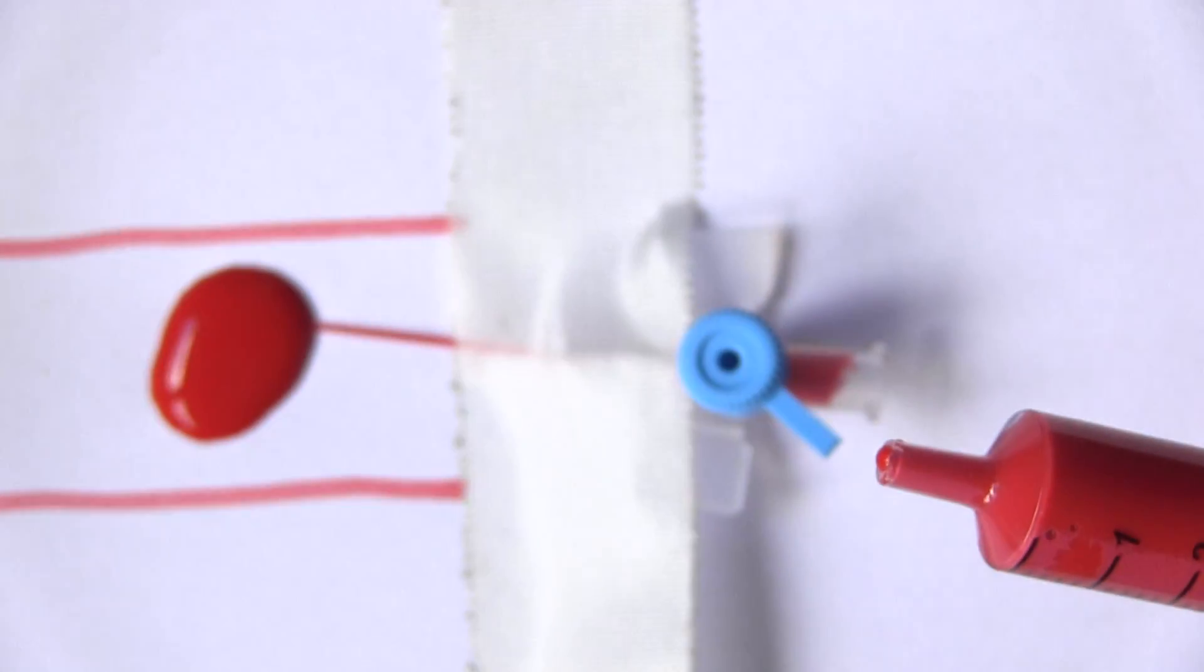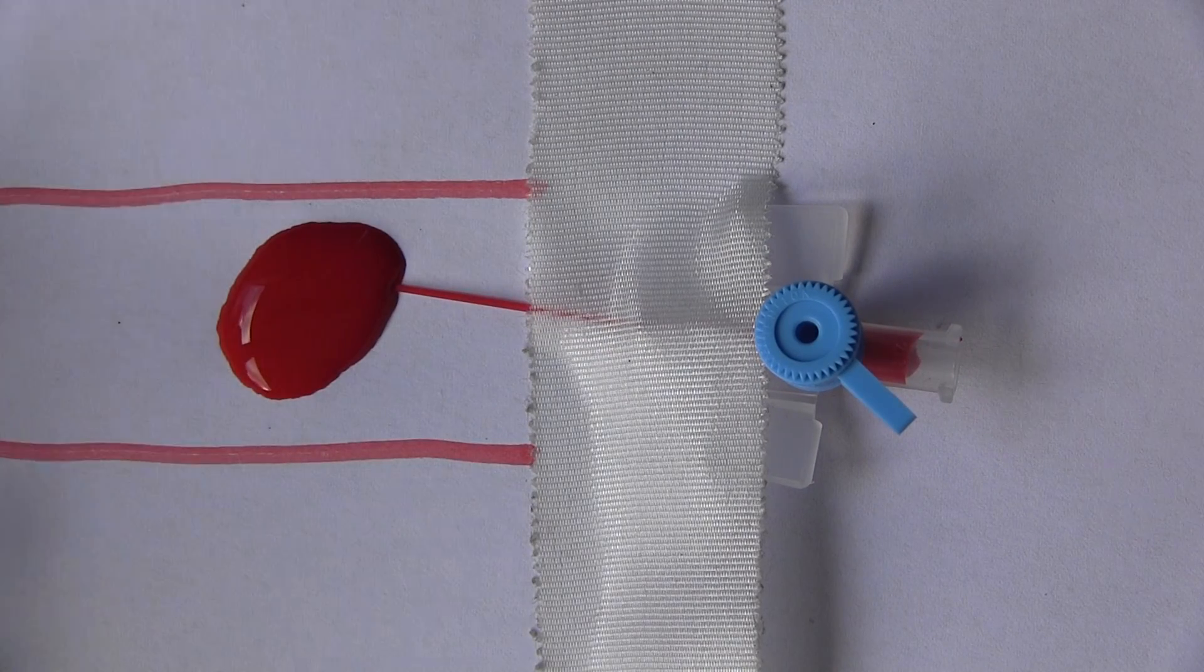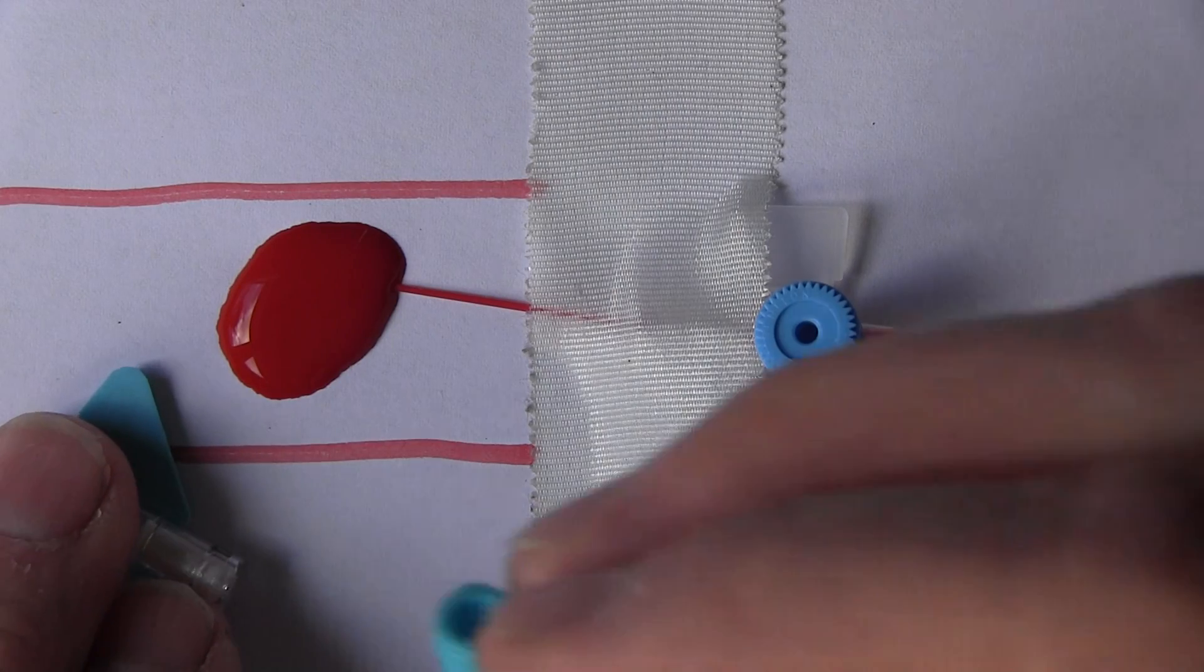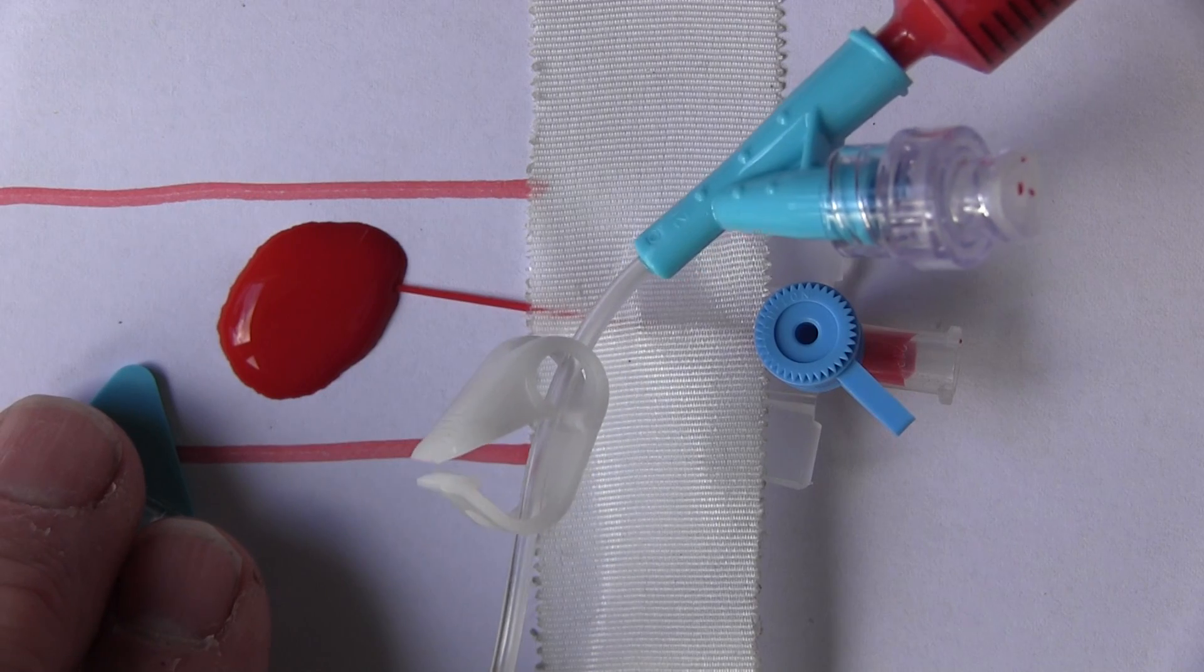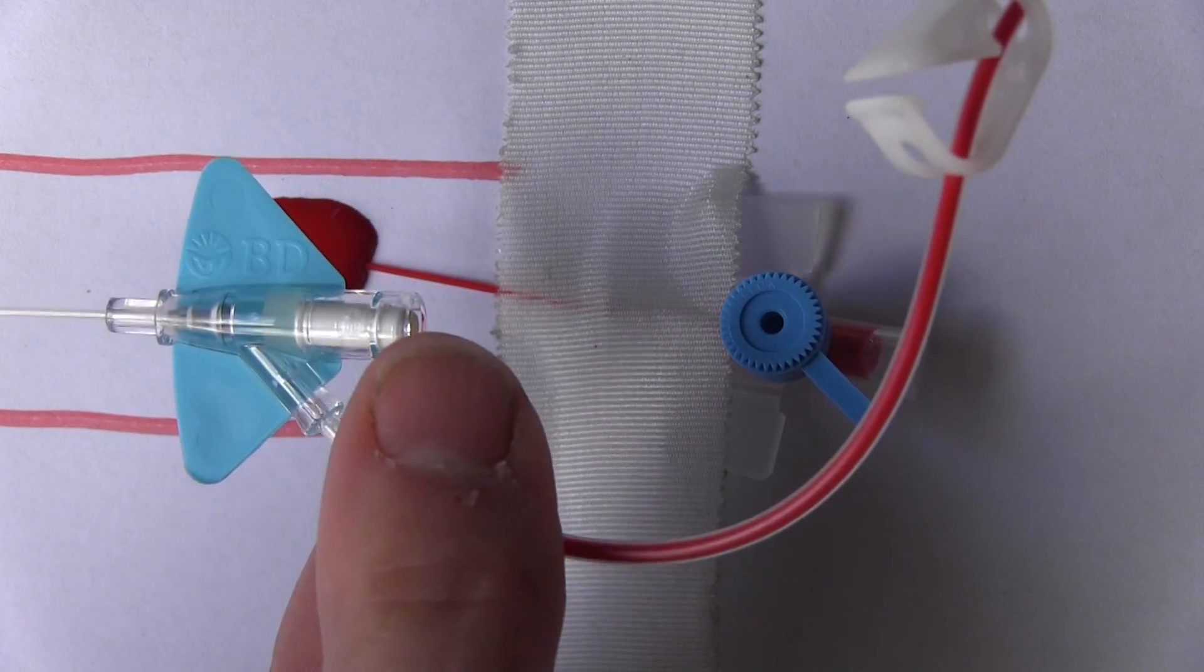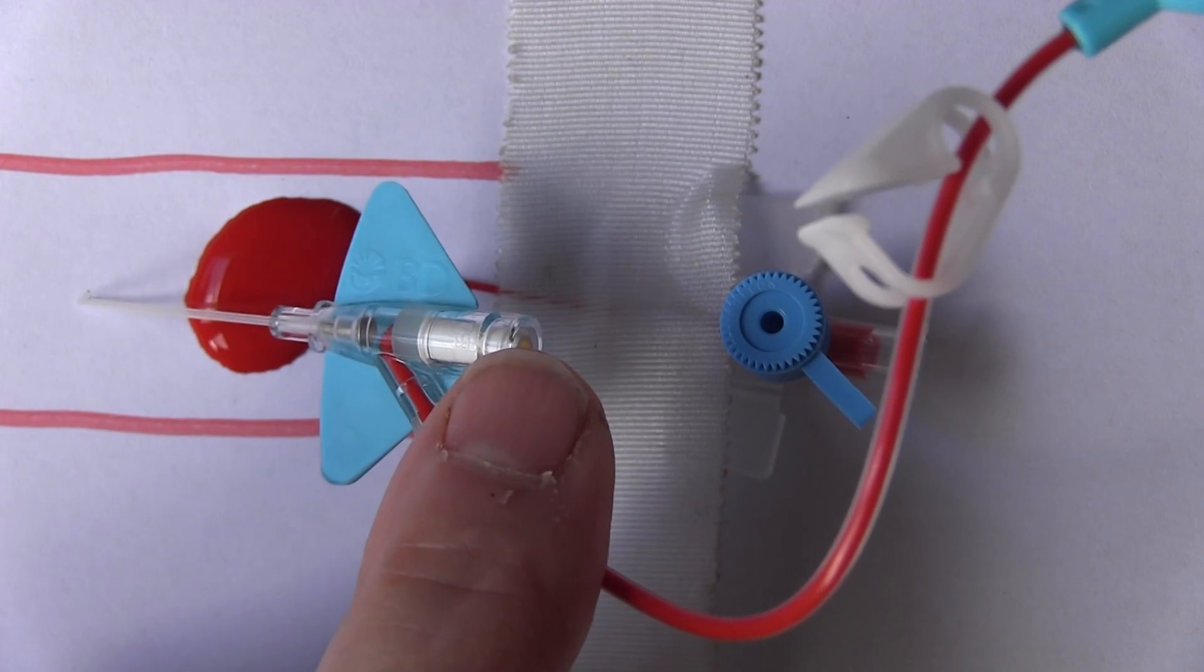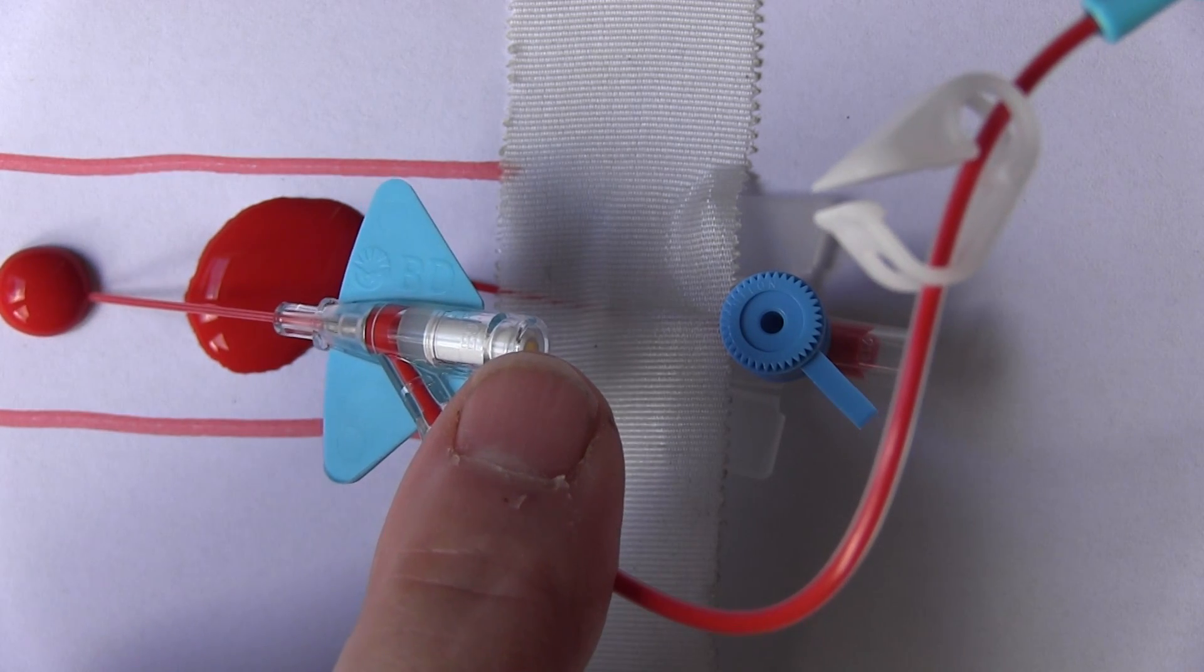Same with this other type of device going into the vein here. And you can see this going through the giving set as I inject it. So you can see the drug going through the line there, all the way through, and then this drug will go directly into the patient's vein.